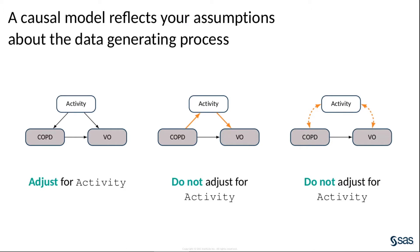In this simple example, you can see that your analysis is determined by your causal assumptions as specified in a DAG. How do you specify a DAG for your research question? And how do you use that DAG to determine a proper analysis? That is the purpose of the causal graph procedure.